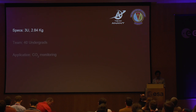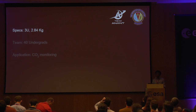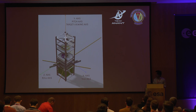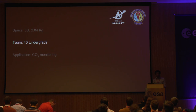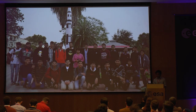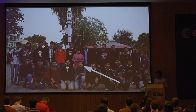Some specifications: our satellite is a three-unit CubeSat and weighs 2.84 kg at the moment, though that may change as we add or remove components. This is what our satellite looks like — just a simulation model. We are a team of 40 undergraduates only, with no postgraduates. We do have a lot of mentorship from our teachers and from ISRO, but the work is mostly done by us undergraduates.